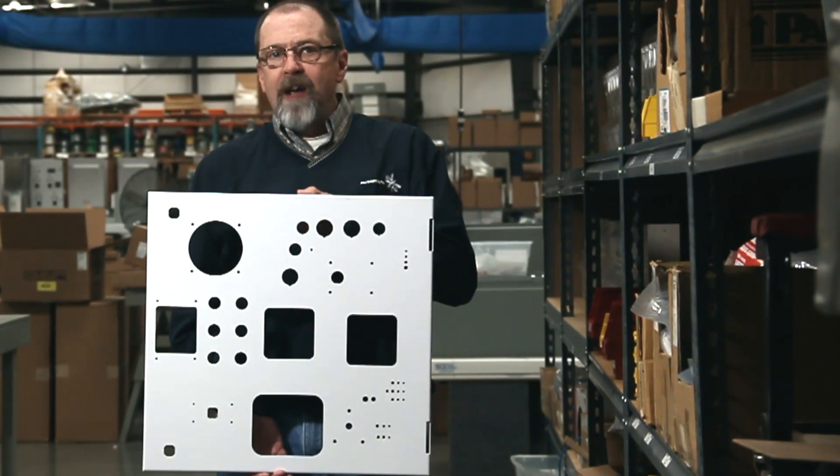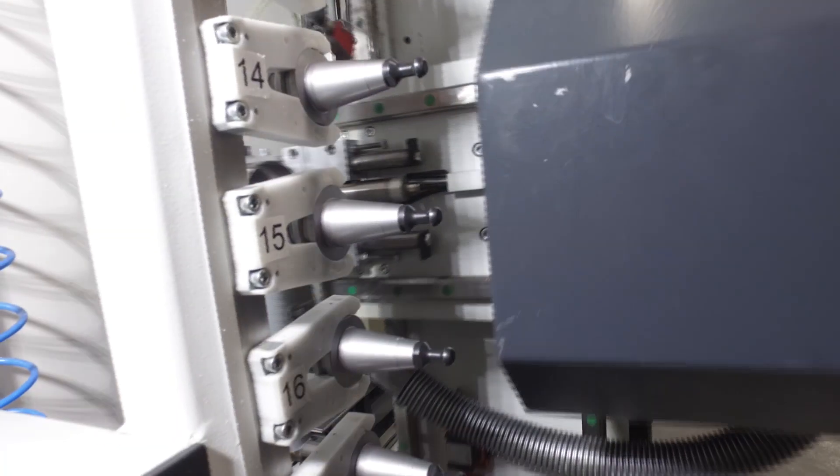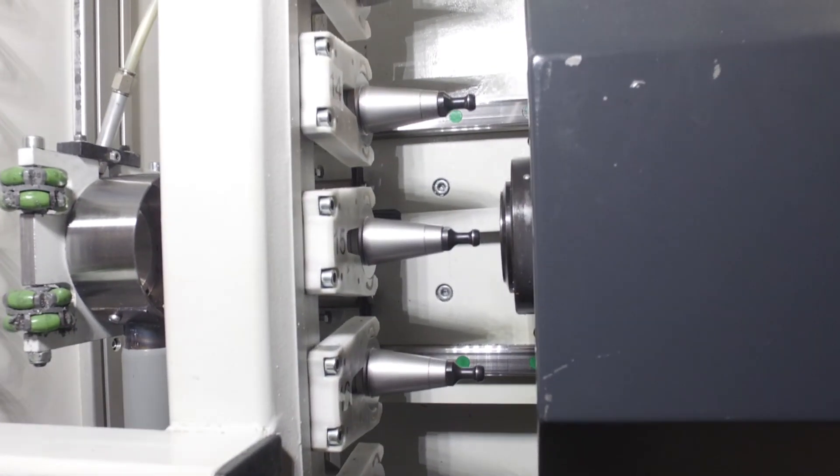Our CNC controlled fabrication machine allows for accurate cutouts in doors and enclosures. It's highly repetitive and very accurate. We also drill and tap our back panels with it, ensuring a perfect fit every time.